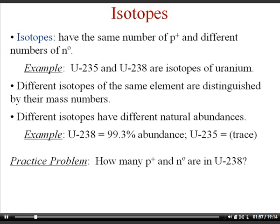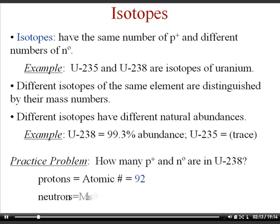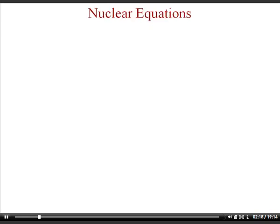Practice problem: How many protons and neutrons are in uranium-238? Looking at the periodic table, uranium is number 92, so it has 92 protons (which also equals the number of electrons when electrically neutral). To find the neutrons: 238 minus 92 equals 146 neutrons.